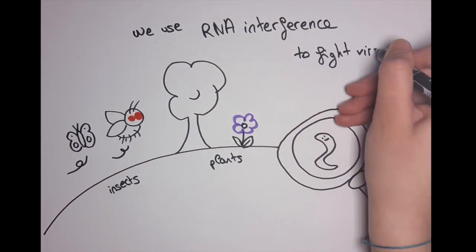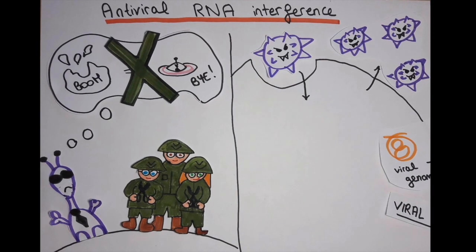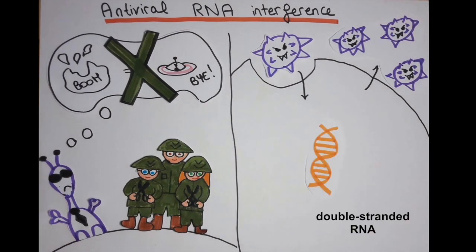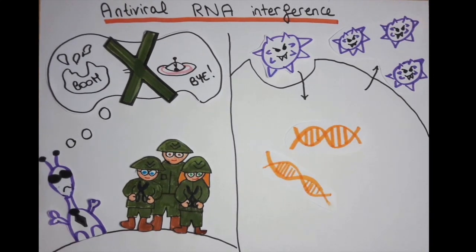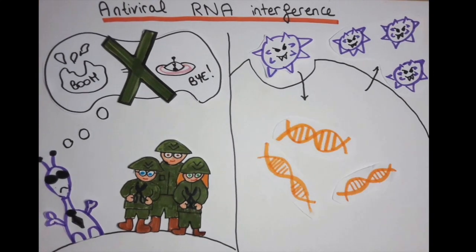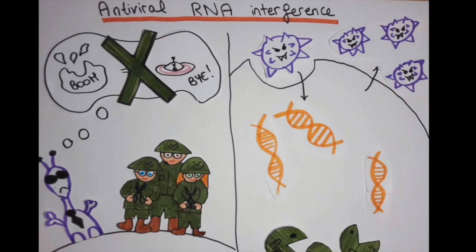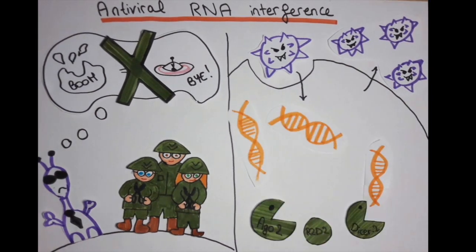When a virus enters the cell of a fruit fly, it will produce something called double-strand RNA, as part of the viral replication. This would correspond to the alien instruction manual. And here, our soldiers are three cellular proteins called Dicer2, R2D2, and Ago2.